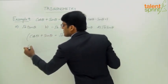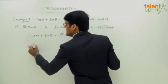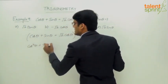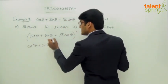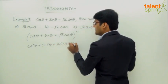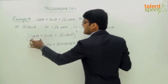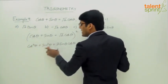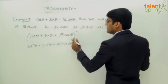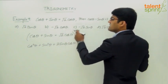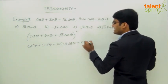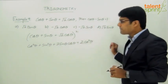Squaring both sides, we get cos squared theta plus sin squared theta plus 2 sin theta cos theta, using the identity (A + B)² = A² + B² + 2AB, equals root 2 cos theta whole squared, which becomes 2 cos squared theta.